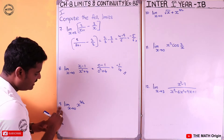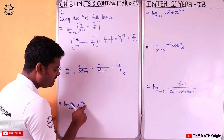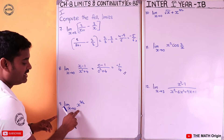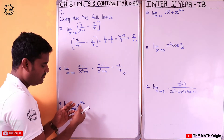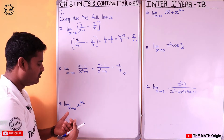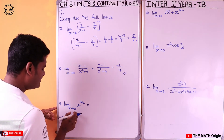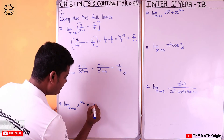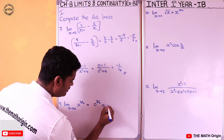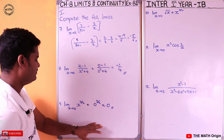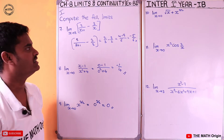Ninth question: limit x tends to 0 of x^(3/2). This is just a numerator function, so we substitute x = 0 directly: 0^(3/2) = 0. With this, we completed the ninth question.